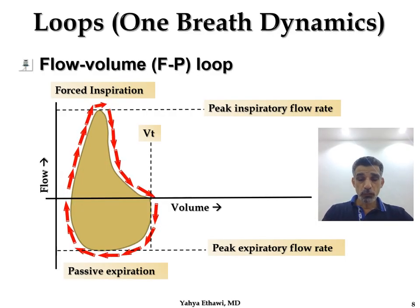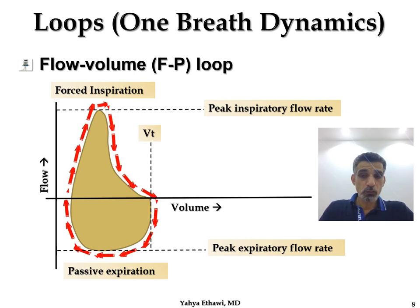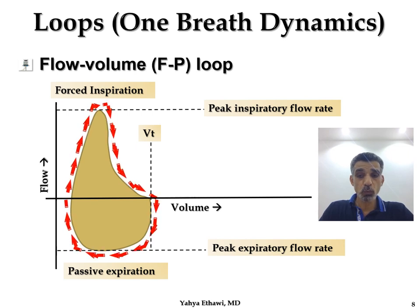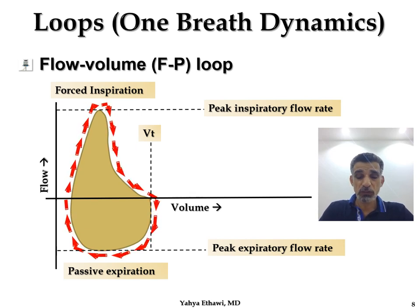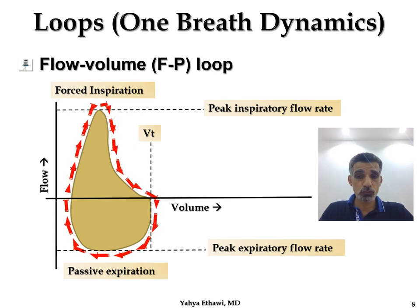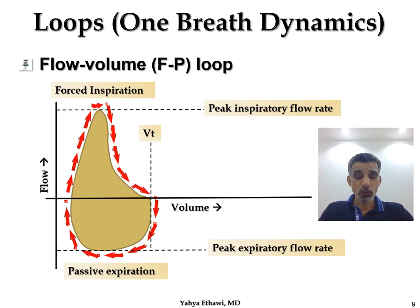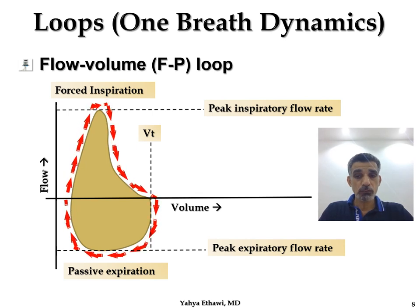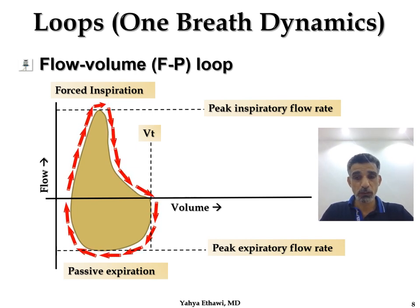The other way of assessing the baby is looking at the loops. The difference between loops and graphics is that loops compare one ventilator parameter versus another — there is no time axis. Therefore, loops only tell you about the dynamics of one cycle, not the trend across successive cycles like graphics do. Most ventilators can show three to seven breath cycles at a time.